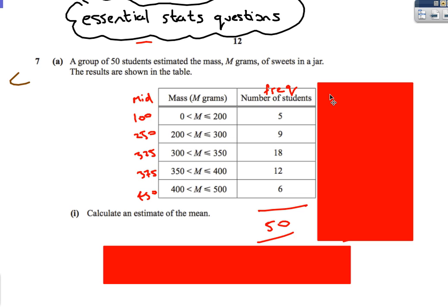We've got 50 students and we're trying to estimate the weight of sweets in a jar, and we want an estimate of the mean guess they're going to make. In this kind of question, the number of students is a frequency. Whenever we've got a domain where we don't know the actual value, we just know it's between certain bounds.